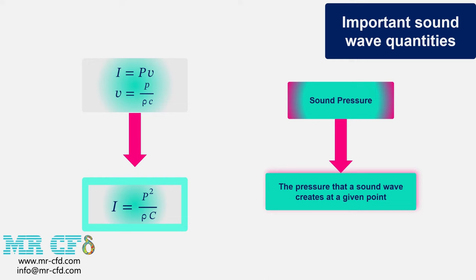Considering that measuring the sound intensity itself is not an easy task, we usually measure the sound pressure instead. Sound pressure is actually the pressure that a sound wave creates at a certain point and its value can be measured with a microphone.